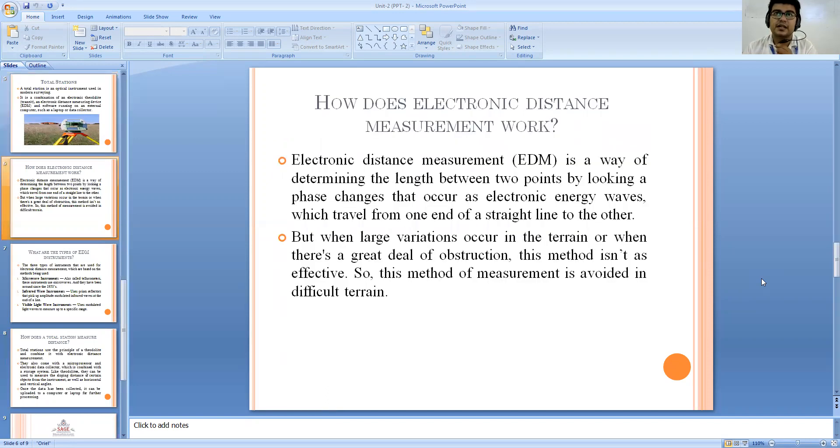Now let us try to understand how does this electronic distance measurement work. Electronic distance measurement, that is EDM, is a way of finding the length between two points by using electronic energy waves. We transmit it from a device known as transmitter and then those waves are again collected back to the collector device. In this way a straight line is marked and we can find out the distance from one point to the other. But when large variations are occurring in the terrain, if there are some variations which are more than normal variations, then various kinds of obstructions are involved and this method is not so effective. So the measurement method is avoided in types of difficult terrain structures or areas where there is possibility of obstructions occurring at each and every step.